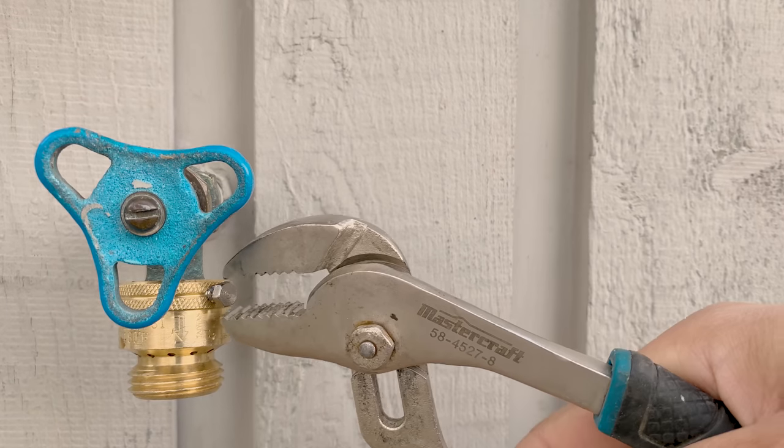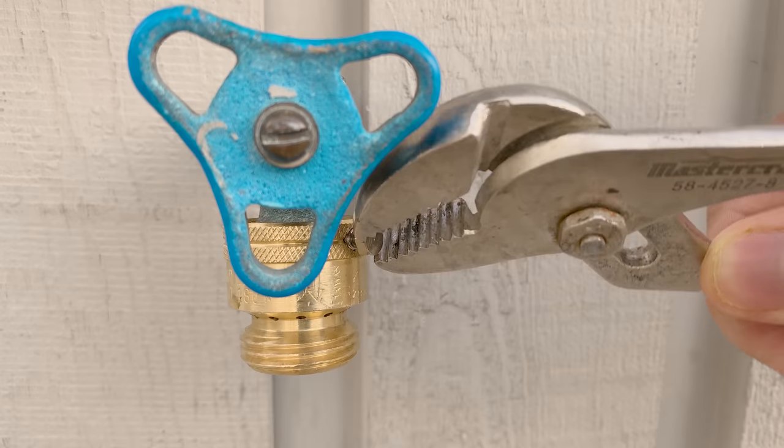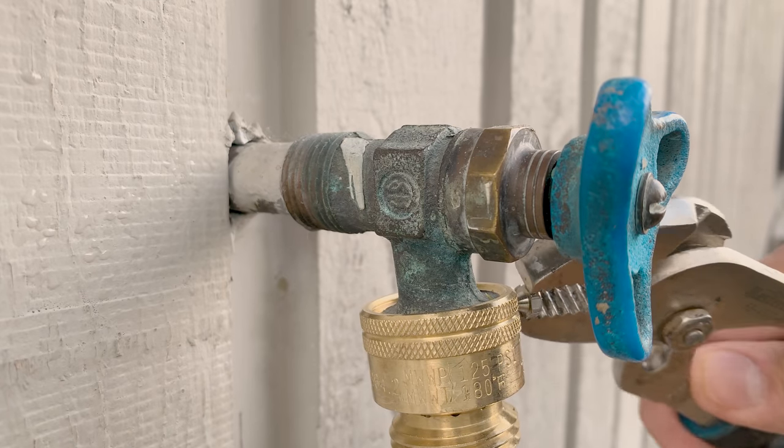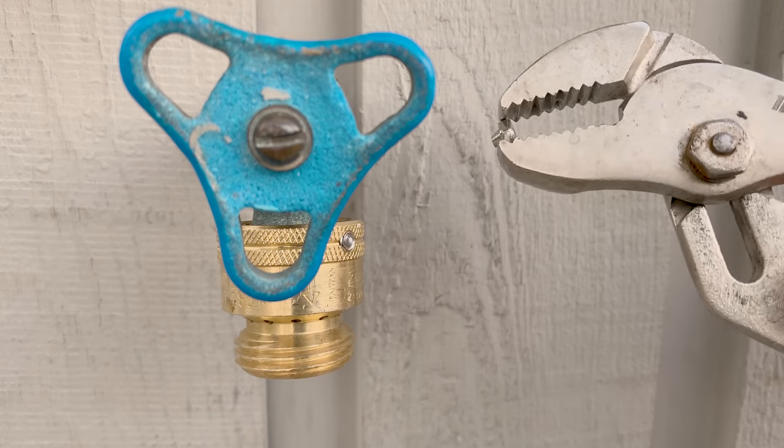A tip here: Do not break the set screw before checking for leaks. It is extremely hard to take the vacuum breaker off once the set screw is broken.